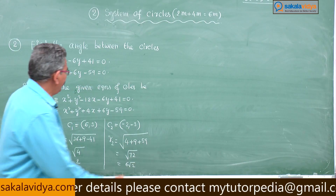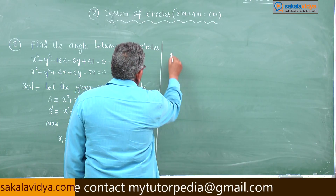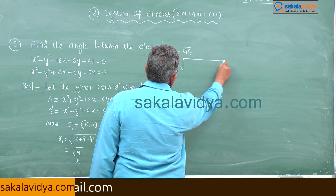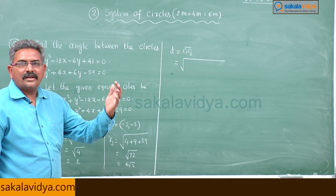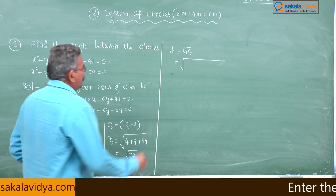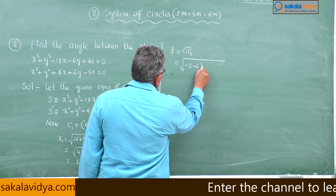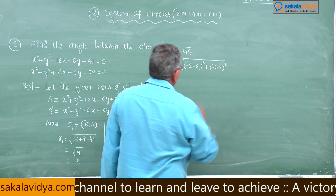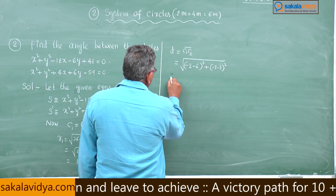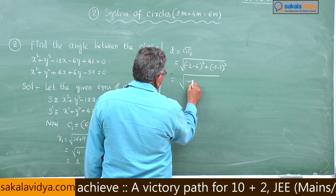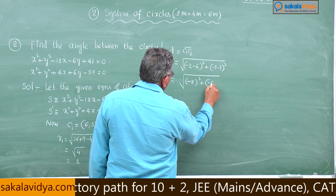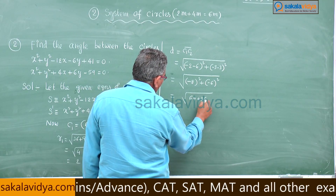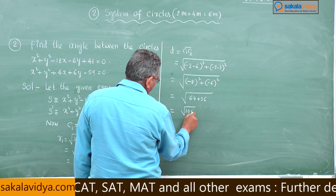Now we have to find the value of d. d equals the distance between C1 and C2, using the distance formula. That is the square root of (−2 − 6) squared plus (−3 − 3) squared, equals the square root of 64 plus 36, equals the square root of 100, which equals 10.